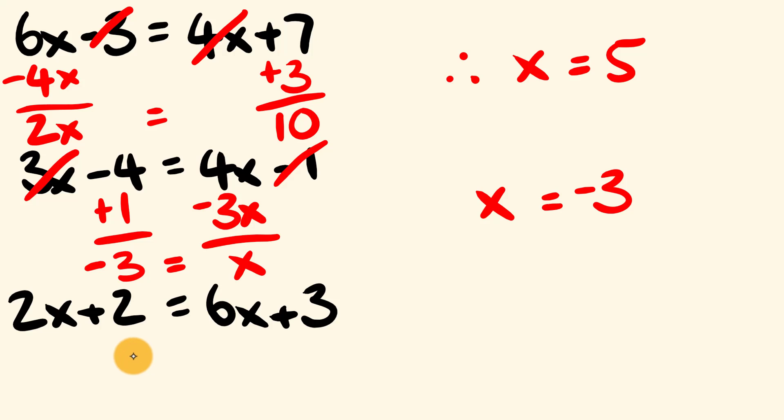We have 2x plus 2 equals 6x plus 3. This one's a little bit trickier but first off what we're going to do is we take 2x off the left hand side. So we're going to take 2x off the right hand side there. 6x minus 2x is equal to 4x. So let's take 3 off this side and take 3 off the left hand side too. We end up with 2 minus 3 is negative 1. So 4x is equal to negative 1.